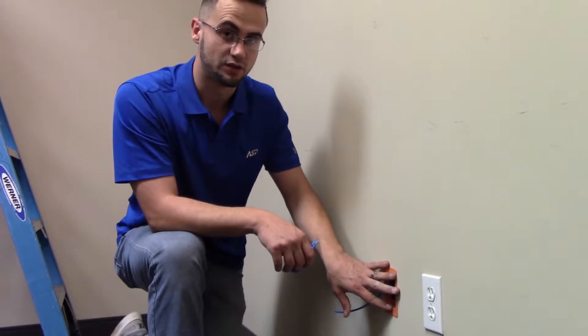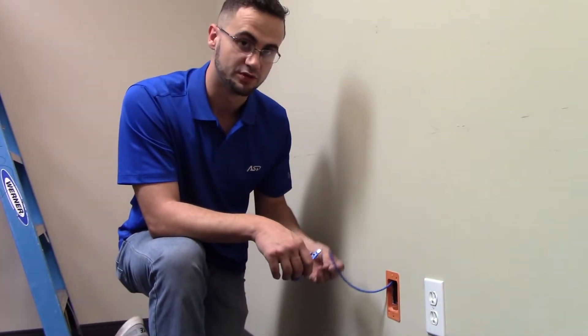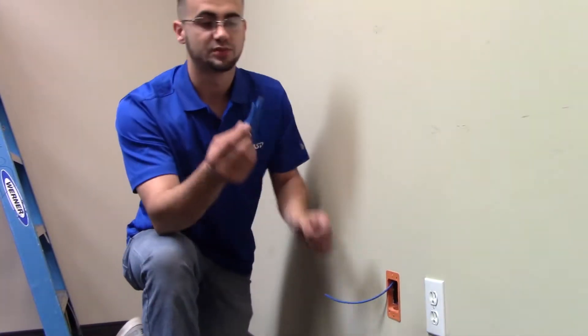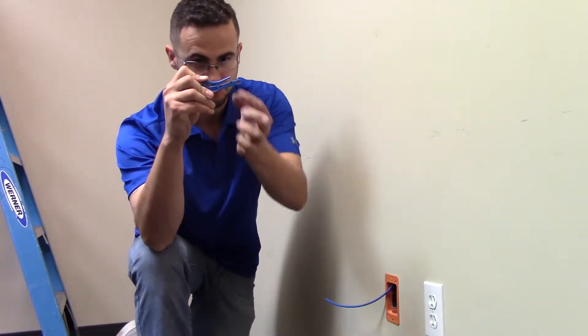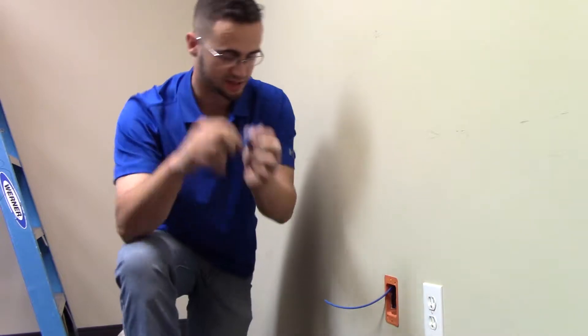So our box is securely mounted in the wall and our cable is fished. At this point we're going to start to terminate. The quick termination tool has a thumb tab that you can press and it opens up and allows you to strip the cable back with the edge of that knife.